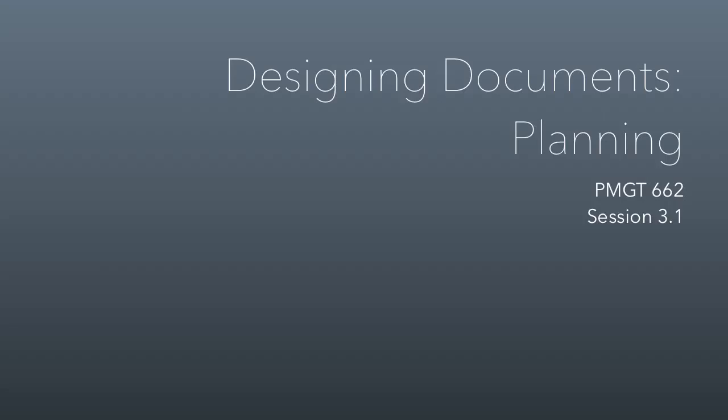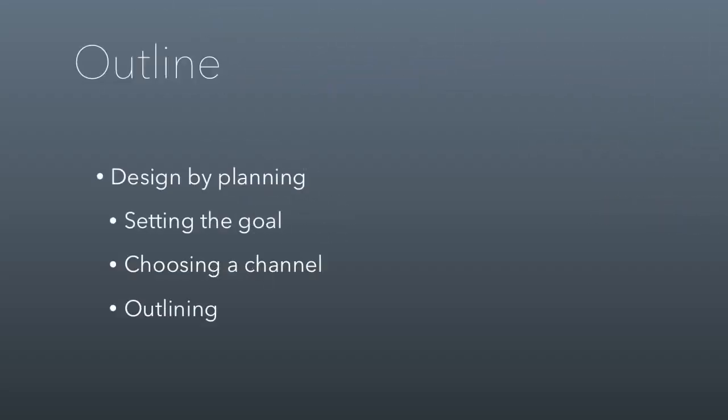Okay, everybody, this is the beginning of our class section about design. A lot of you may be thinking visual design still, even though I've tried to expand your definition. But design is not just about how a document looks, it's also about how a document works. And that's going to be really emphasized in this brief class session. We're going to talk about designing by planning and how planning plays a role in design — setting a goal for every written document, choosing a channel for your document, and outlining documents.